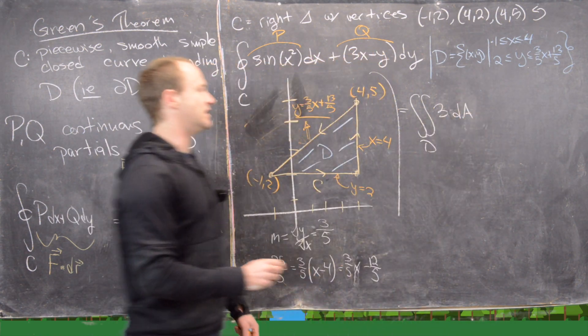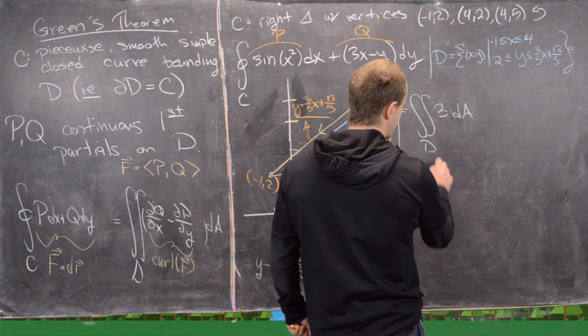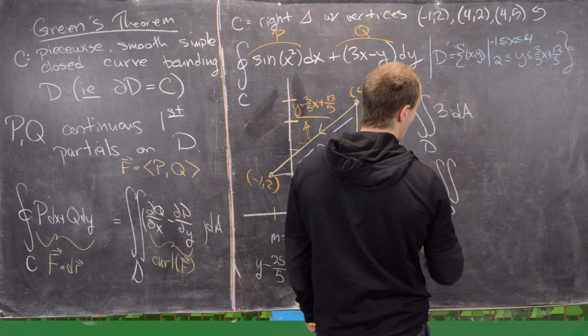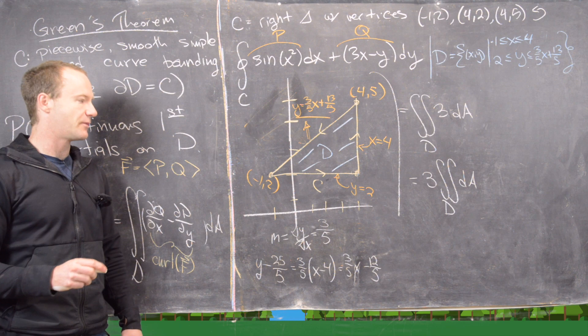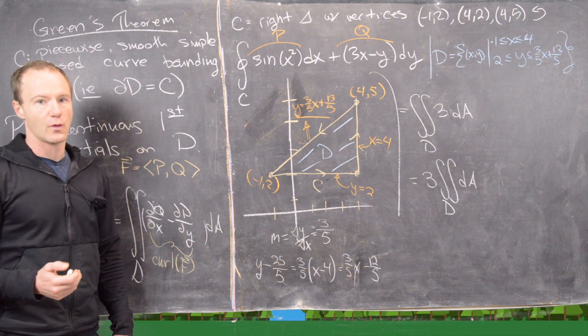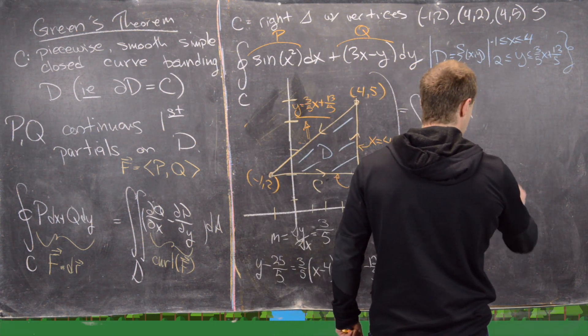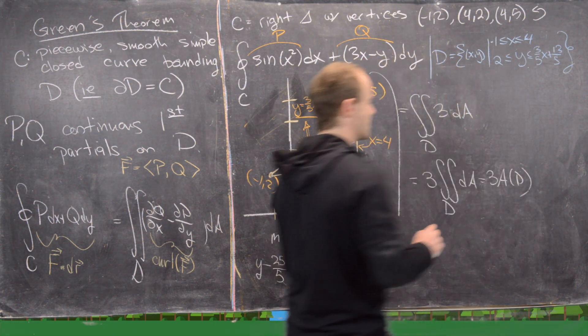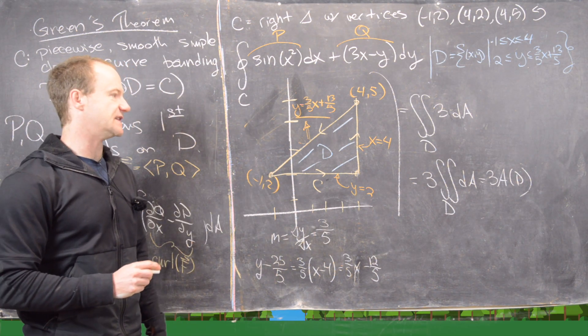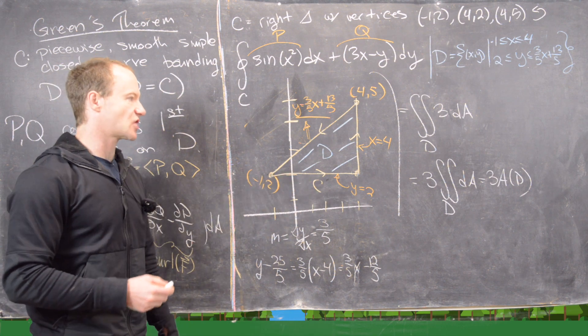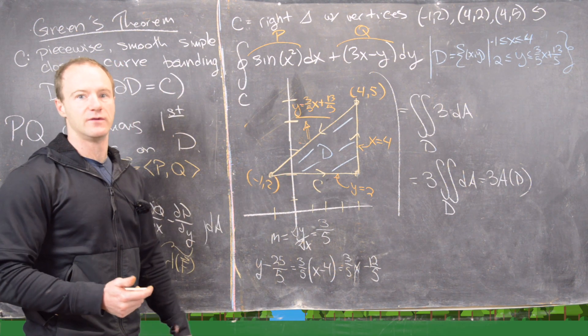I'm just going to go ahead and erase that. We have this dA right here. The next thing we can see is that this is 3 times the double integral over D of dA. Now we can actually calculate this a couple of different ways.